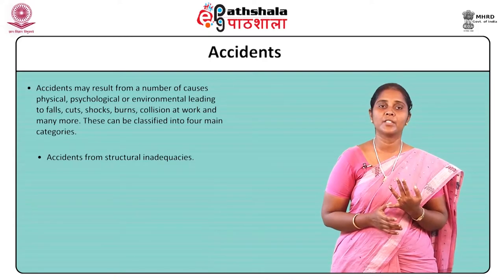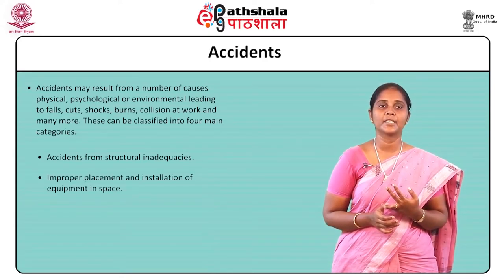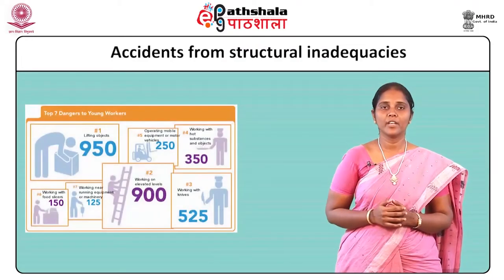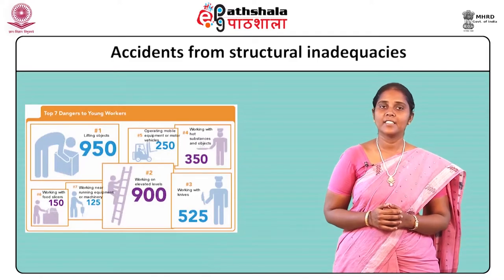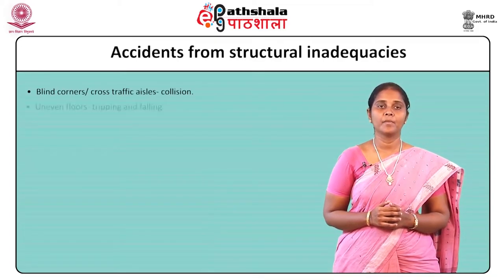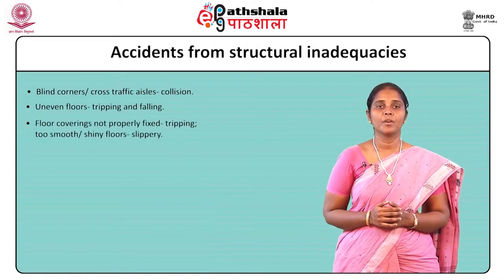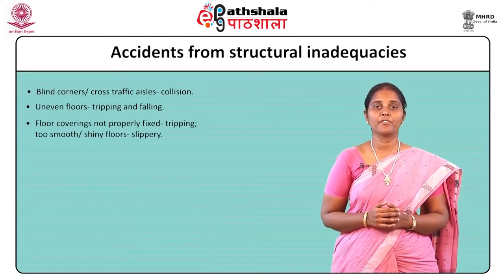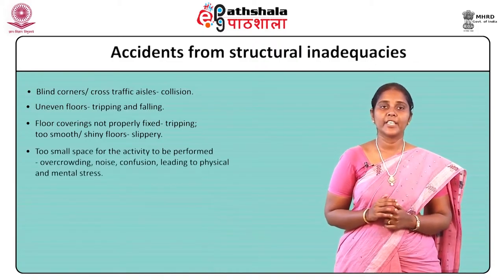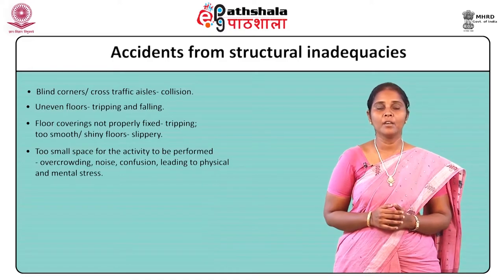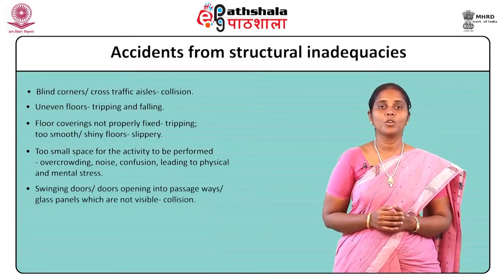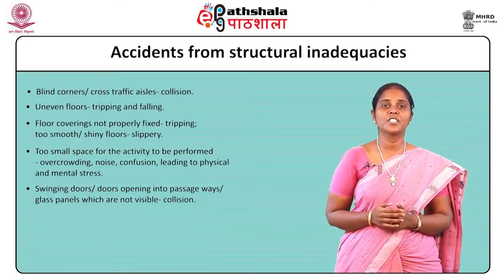The four categories are: accidents from structural inadequacies, improper placement and installation of equipment in space, improper working habits, and the nature and behaviour of people at work. Examples of structural inadequacies include: blind corners or cross-traffic areas that could lead to collision; uneven floors leading to tripping and falling; floor coverings not properly fixed; too smooth or shiny floors leading to slipping; work space too small causing overcrowding, noise, and confusion; swinging doors or glass panels not visible leading to collision.